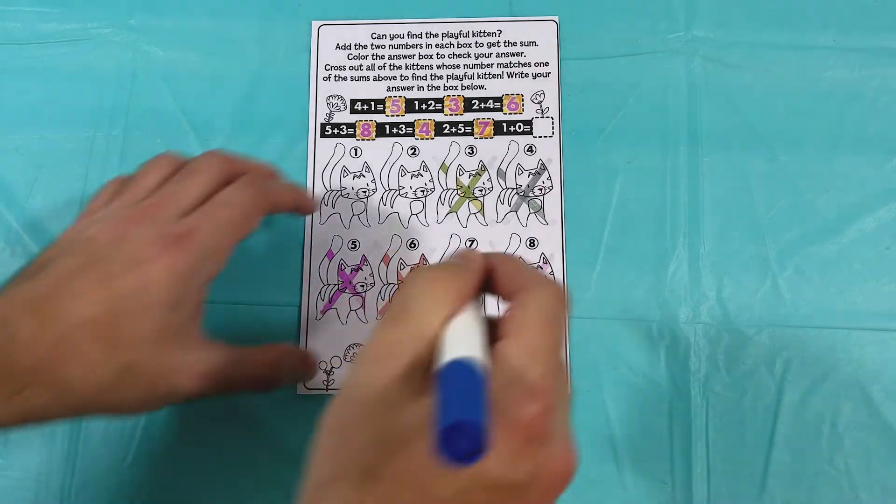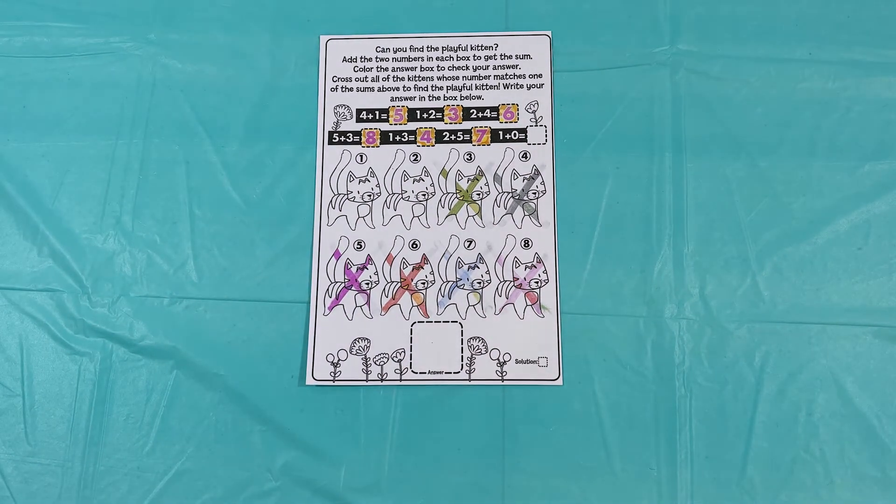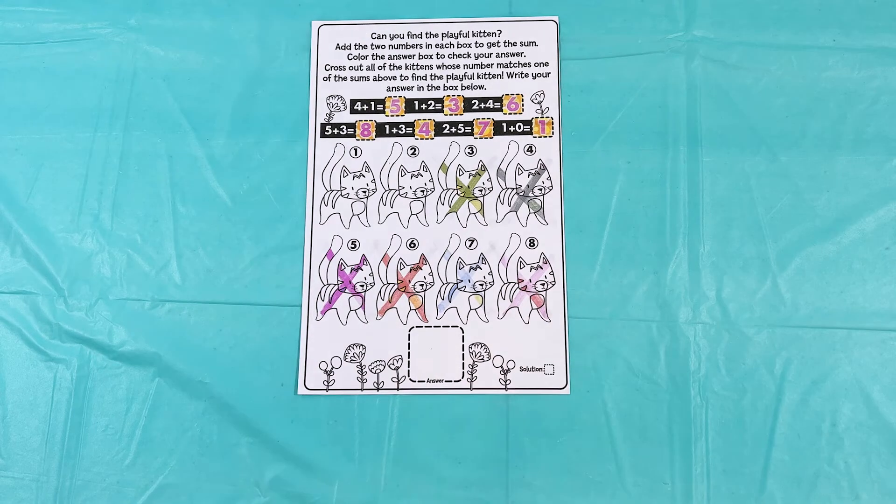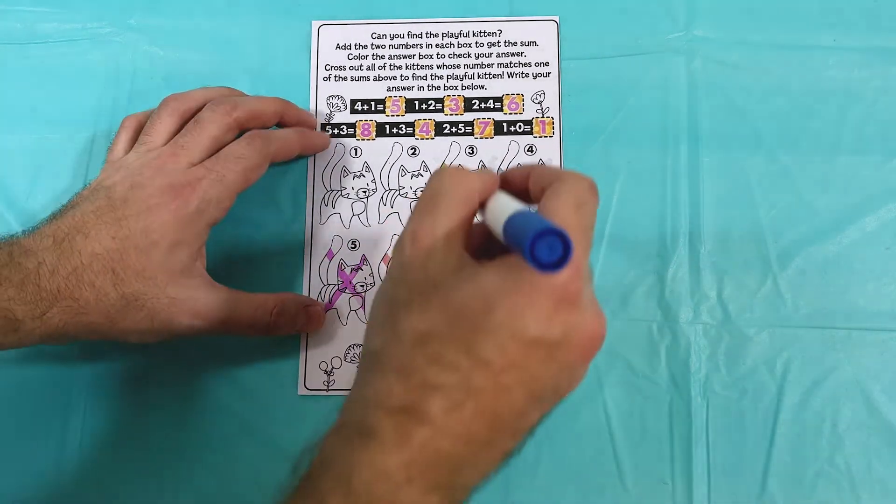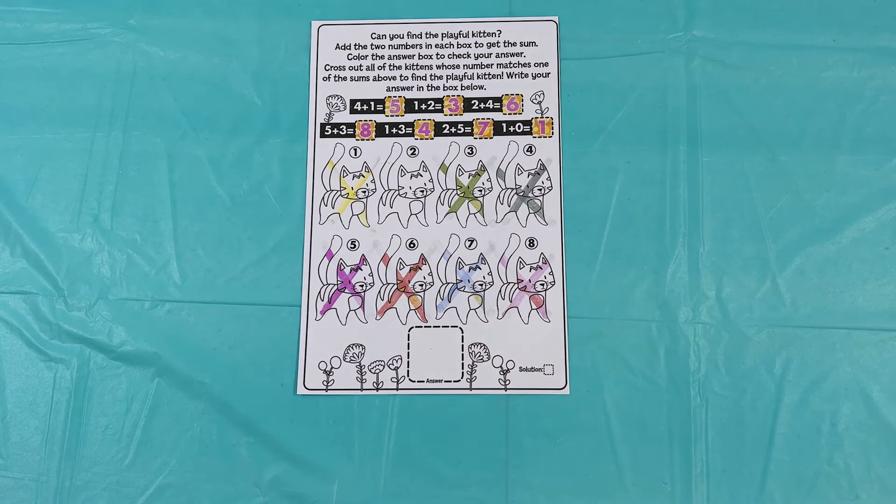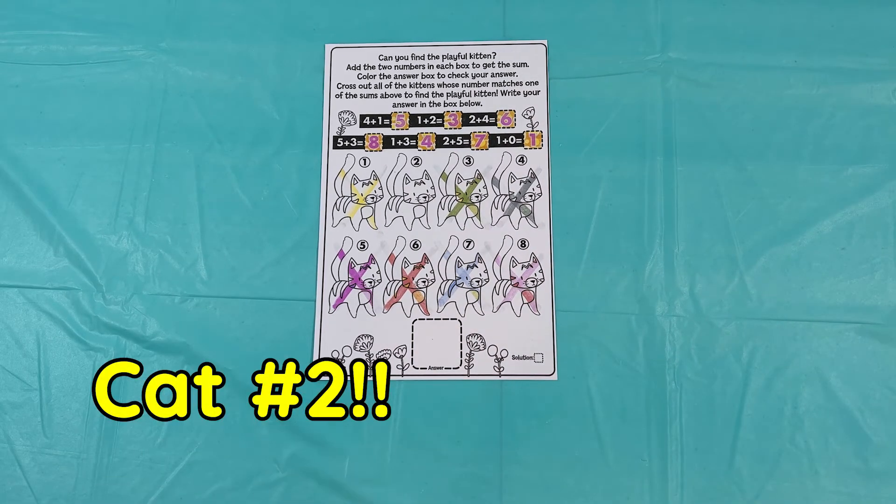Awesome job. All right. Last problem. One plus zero. That's right, we're not adding anything. So it's one. Awesome job. All right. Let's cross out cat number one. Wow. Look at that. It looks like cat number two is the only one that's not crossed out. So that's our answer. Cat number two is the playful kitten.